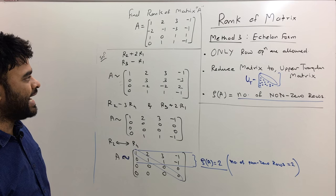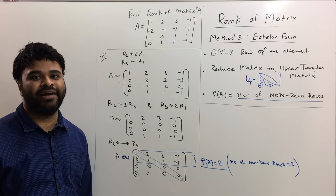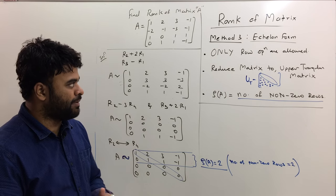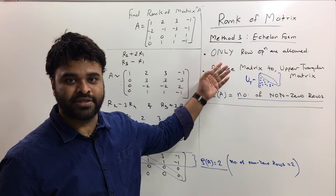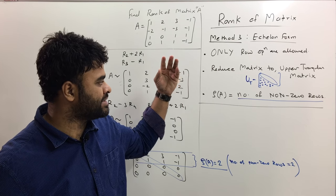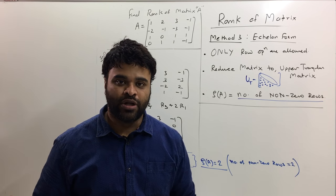The rank of this matrix A is 2 because the number of non-zero rows is equal to 2. This is the echelon form, the easiest of all because you don't have to reduce matrix to an identity matrix or anything. You just have to apply only row operations, but remember you are not supposed to apply column operations. Only row operations, reduce it to the upper triangular matrix, and the rank of A is finally the number of non-zero rows.